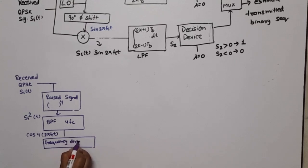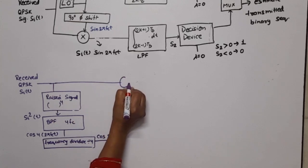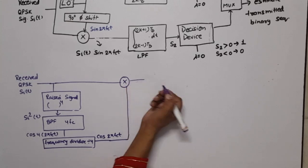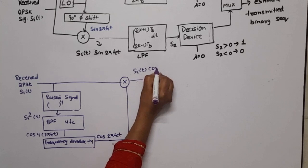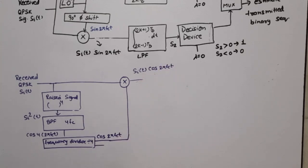For the in-phase channel, there is a product modulator. The same signal is applied along with this carrier. The output of this product modulator will be si(t) cos(2π fc t). The output is then phase shifted by 90 degrees to get sin(2π fc t), which is applied to the second product modulator.